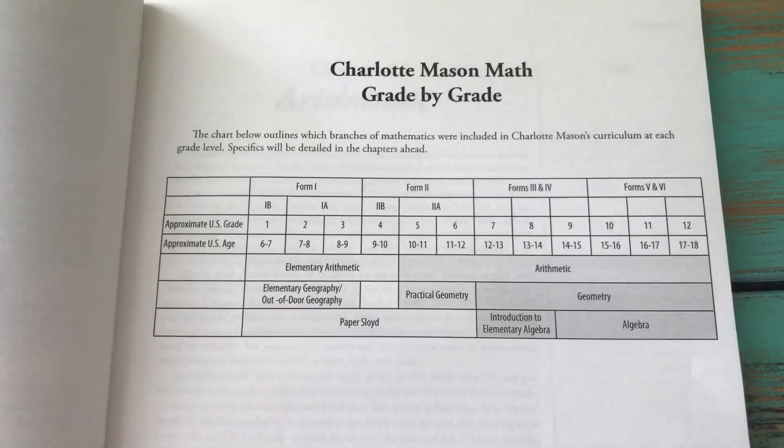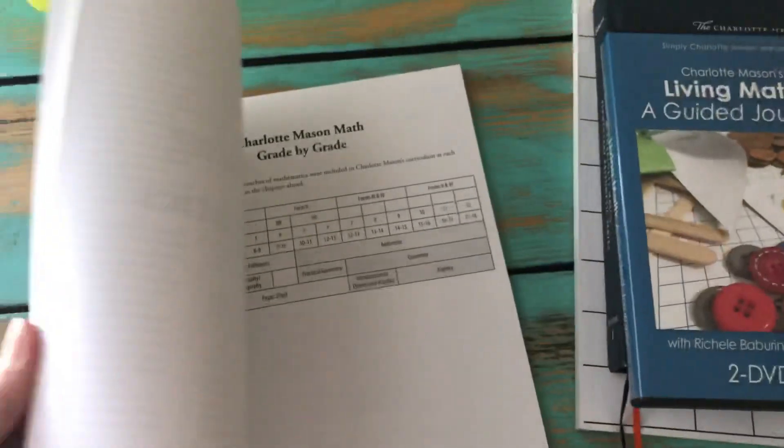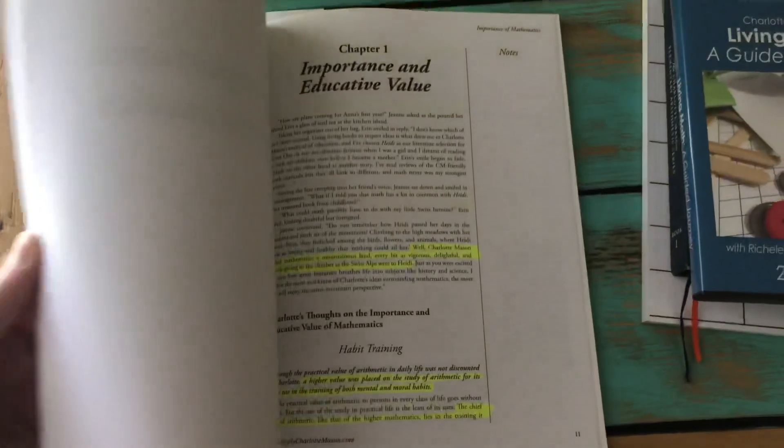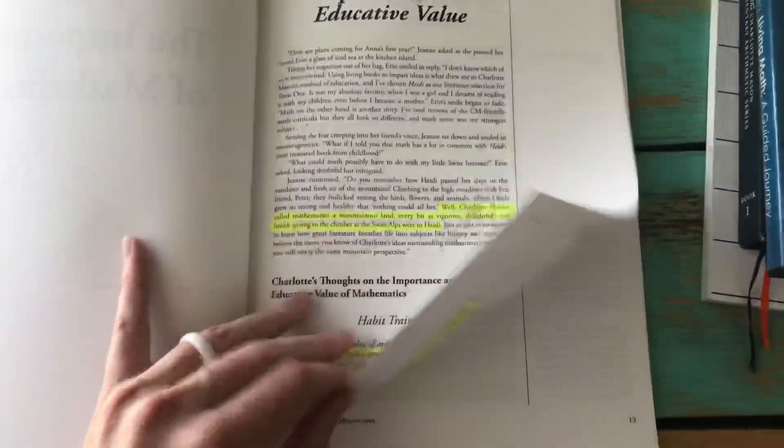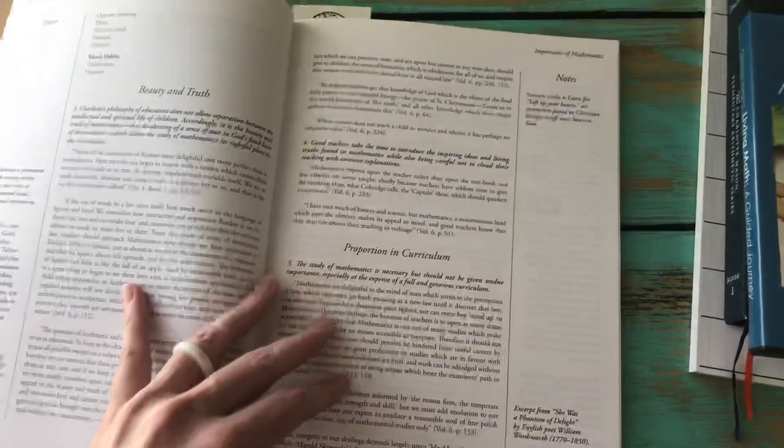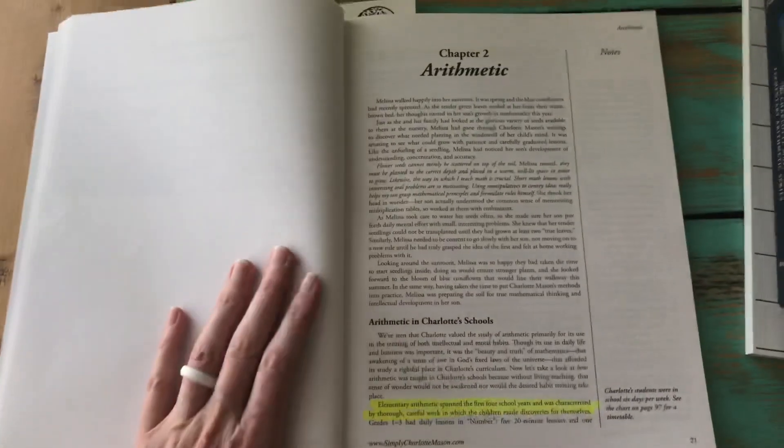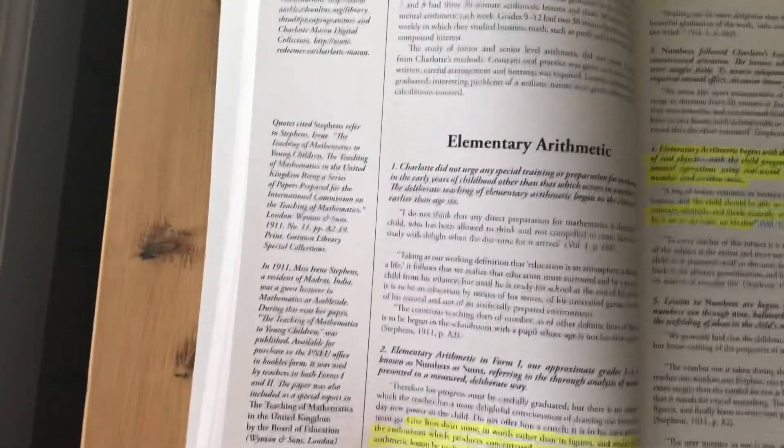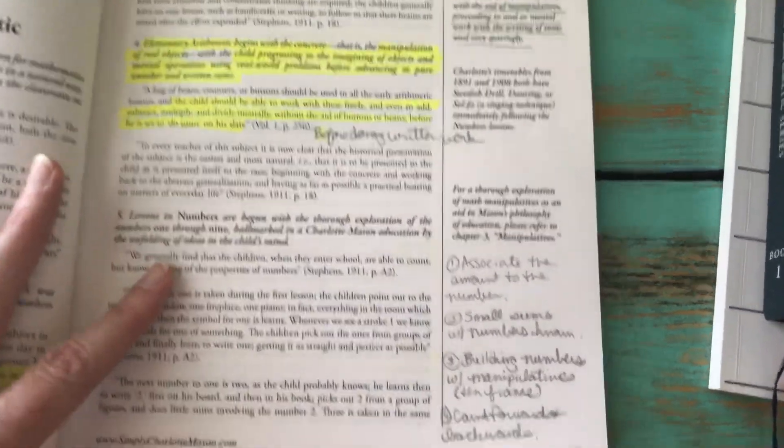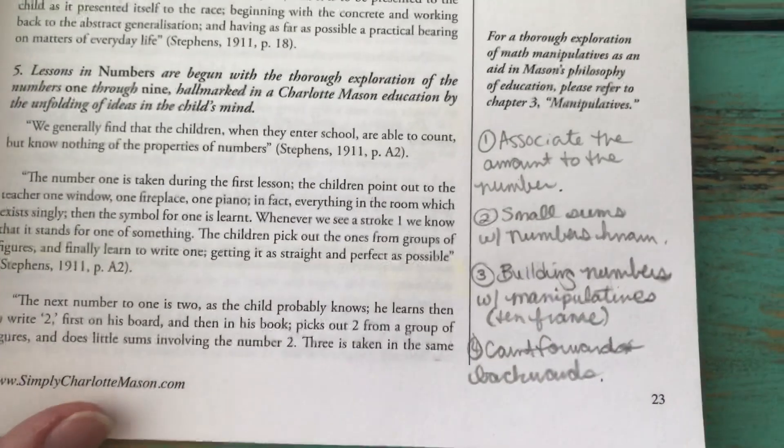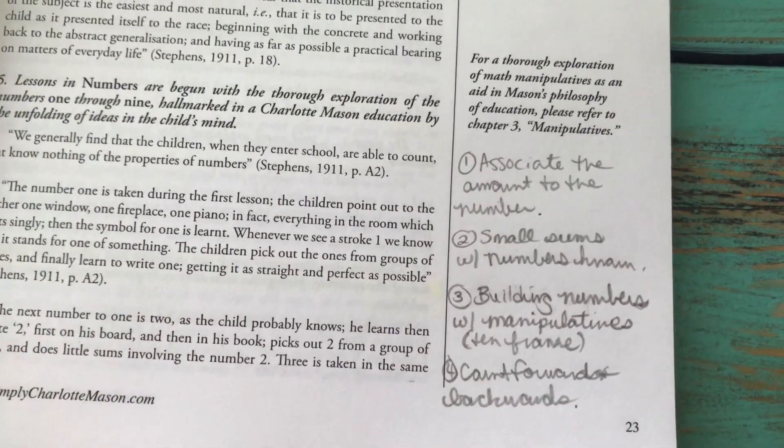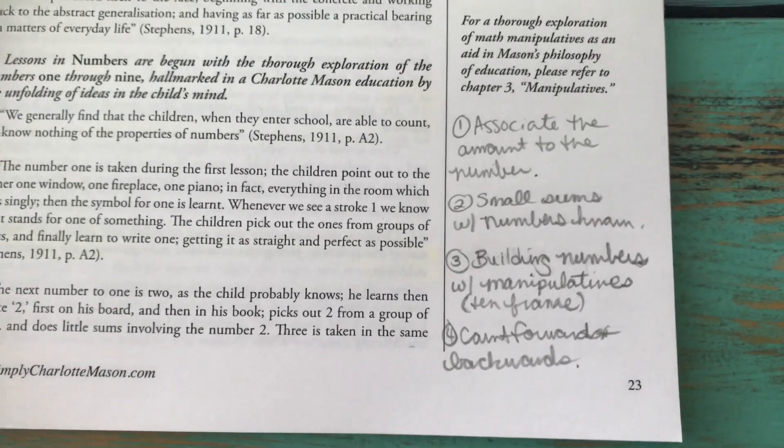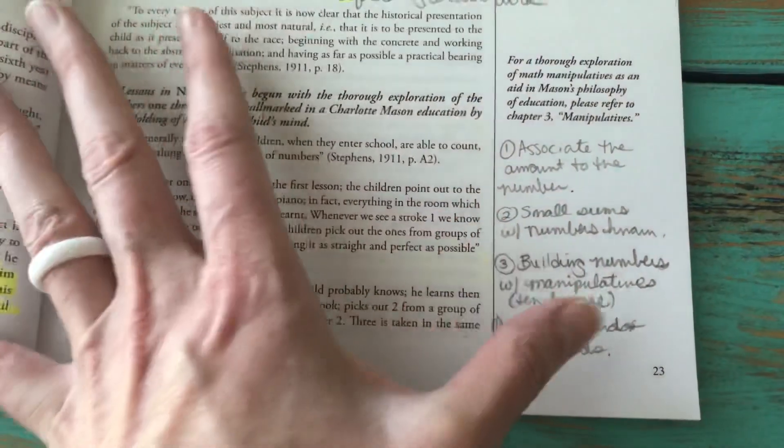Chapter one is all the whys behind why you would do it this way. It covers habit training. Chapter two gets into the actual teaching. There's arithmetic, little side notes, and I wrote notes to myself. They associate the amount to the number, do small sums with numbers they know, build numbers with manipulatives or a ten frame.